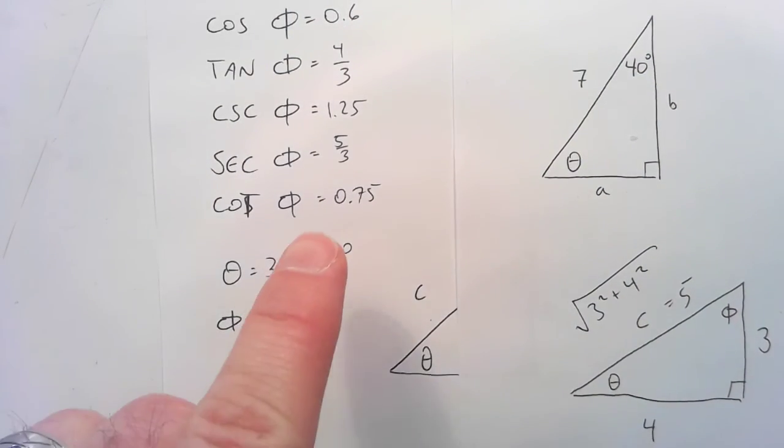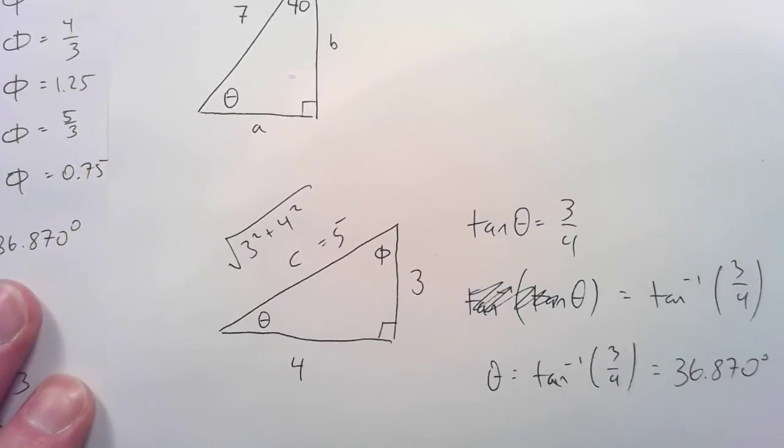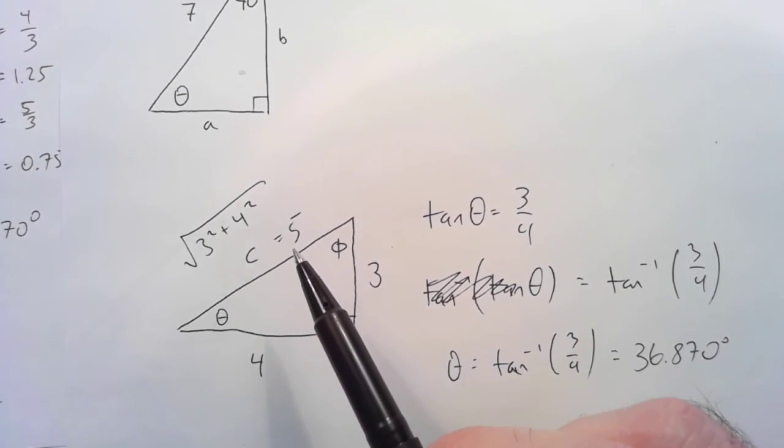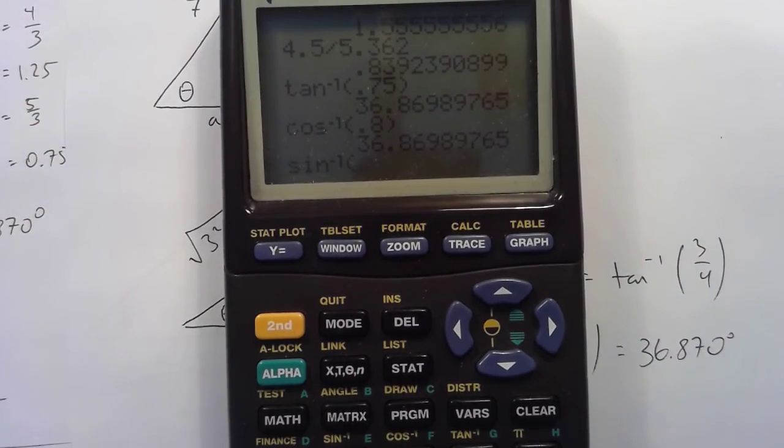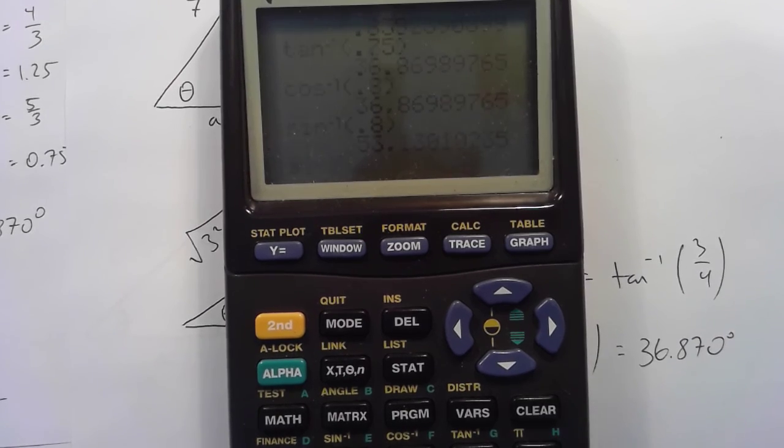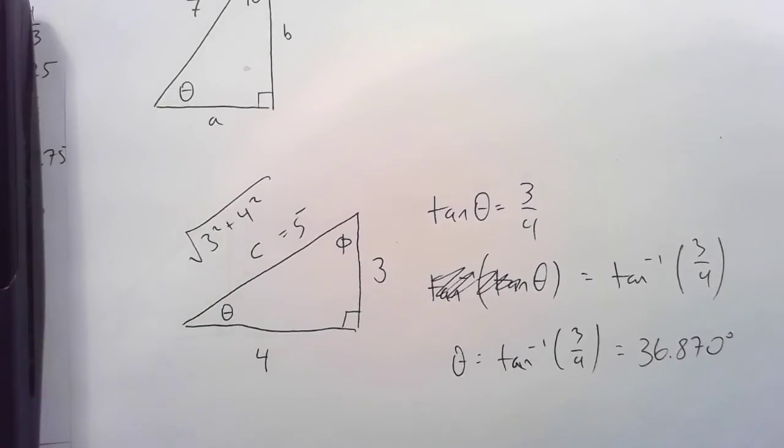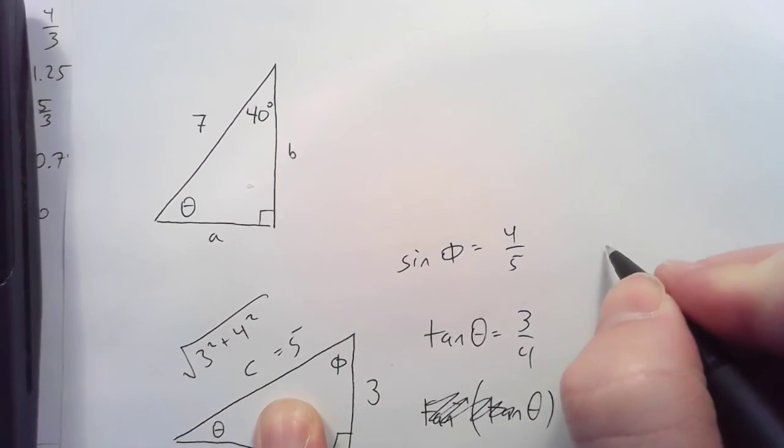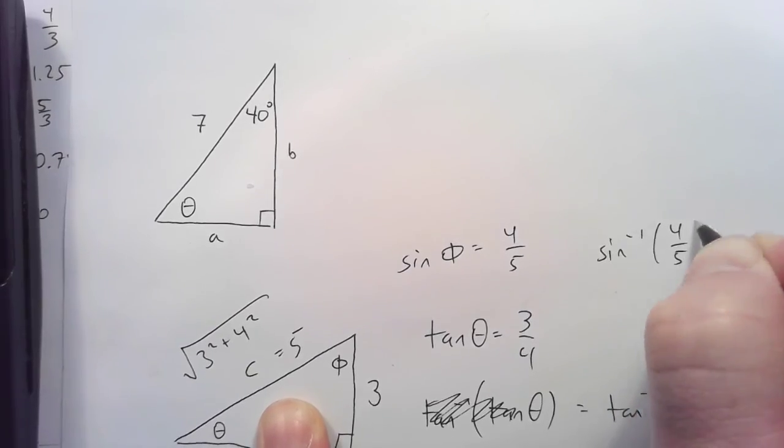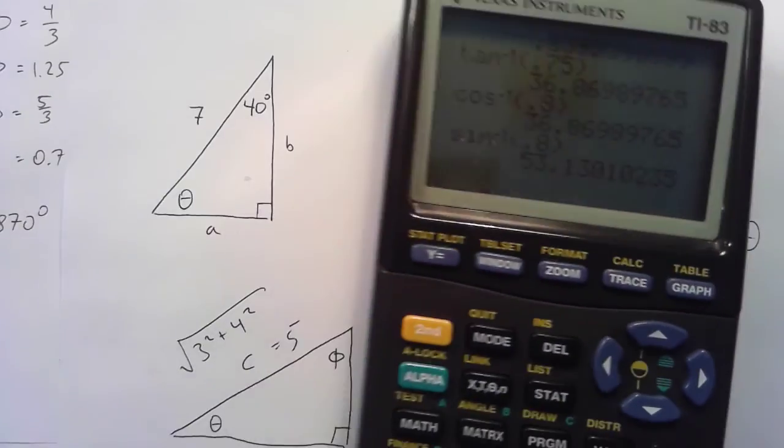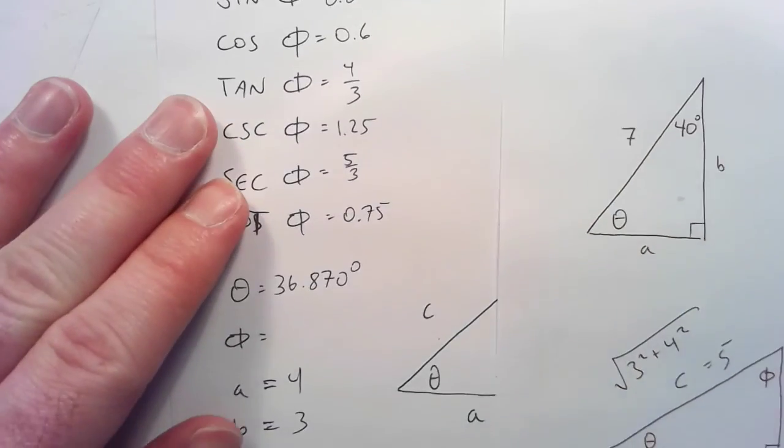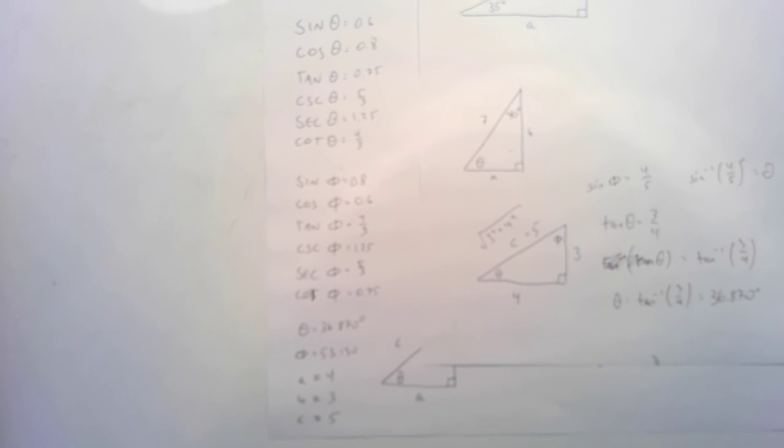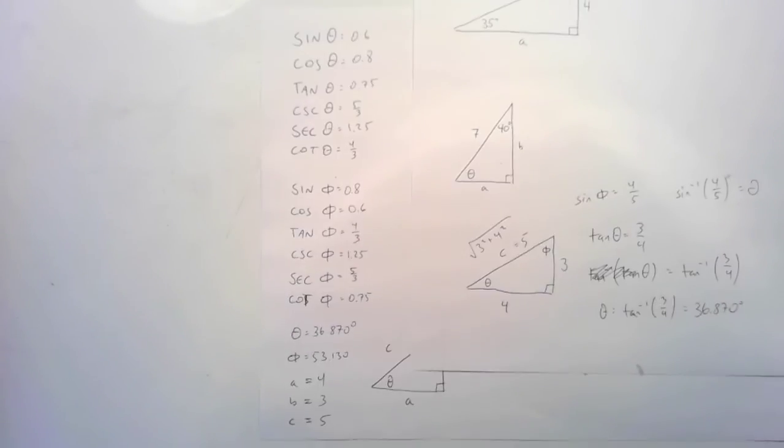And for phi, yeah, you could do 90 minus 36.870, but I feel like using a trig function. I used tangent and cosine before, now I'm going to use sine. The sine of phi would be 4 over 5, so I'll do the inverse sine of 4 over 5. 53.130. So, just to be clear, if the sine of phi is equal to opposite over hypotenuse, then the inverse sine of 4/5 must equal that angle, and it did. 53.130. So, that is, in focus, the last one.